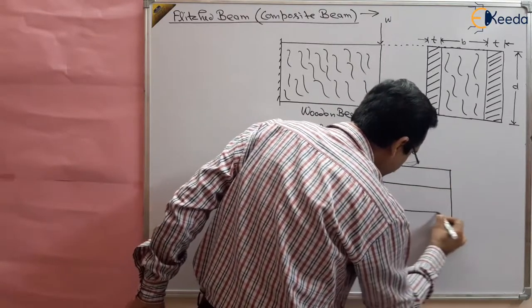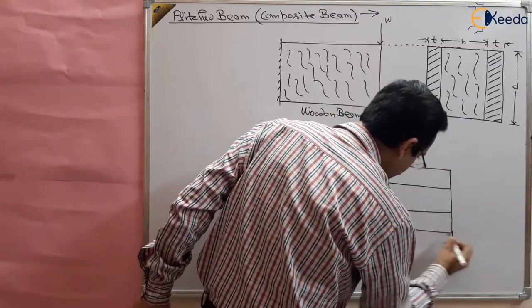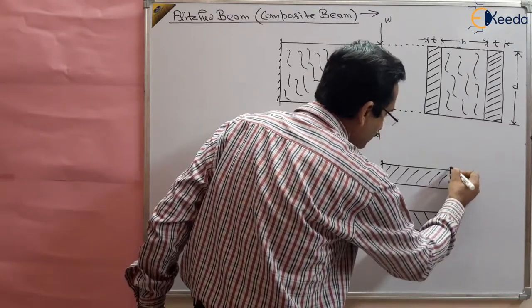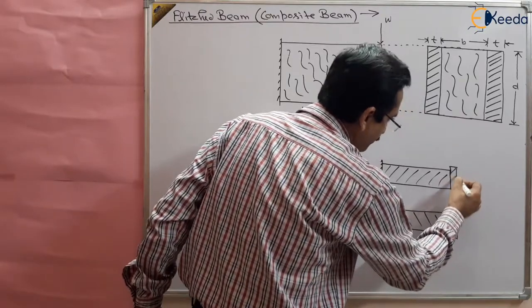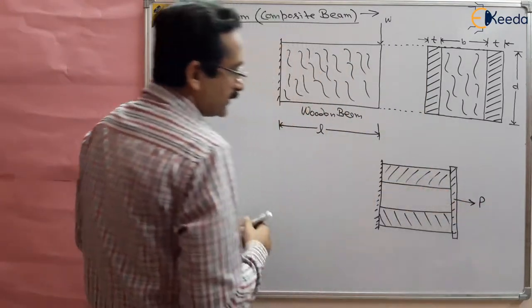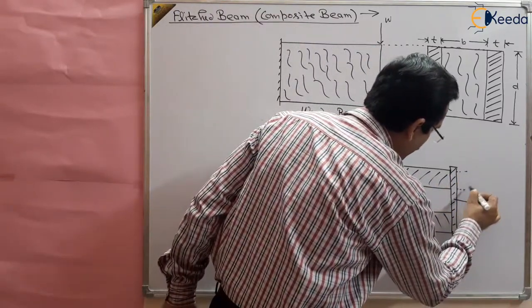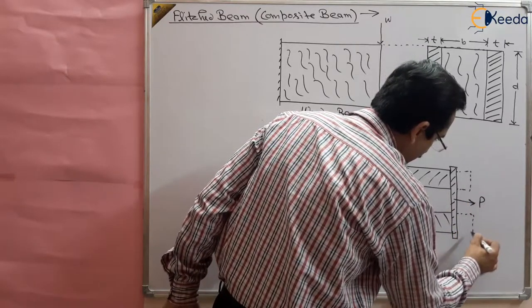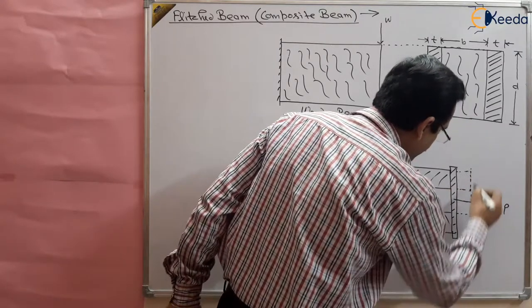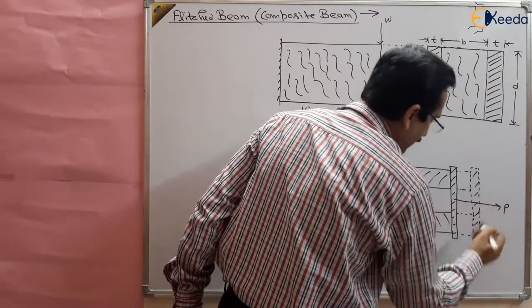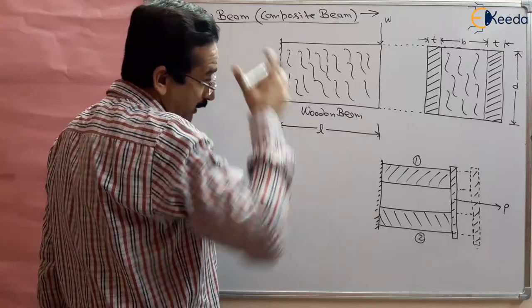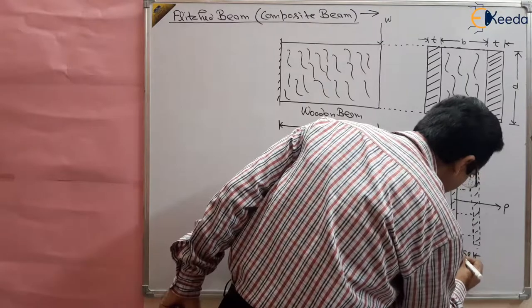In the first chapter, you have studied about composite bars like this — one material and another material — with a plate at which they are connected, and some load is applied. By applying the load, there will be some deformation in each bar, and you know that the deformation will be uniform and the same throughout. The load will be shared by both materials.